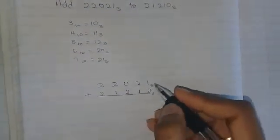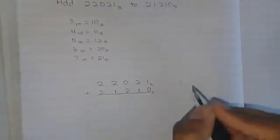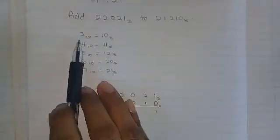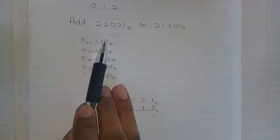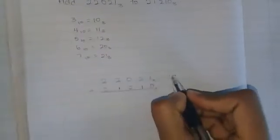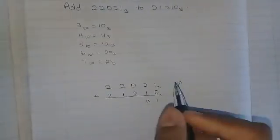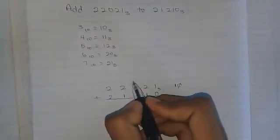And now we add. 0 plus 1 gives us 1. 2 plus 1 gives us 3. And 3 base 10 now is equal to 10 base 3. So, we put the 10 out here, take the 0, place it under here. And we have the 1, put it there.